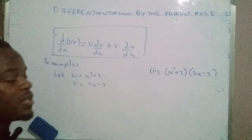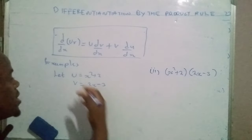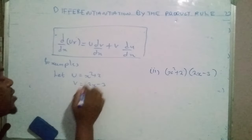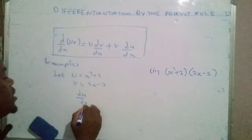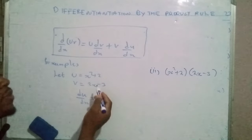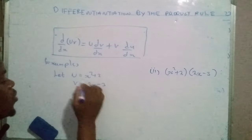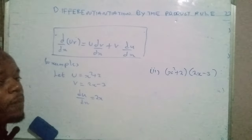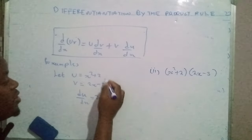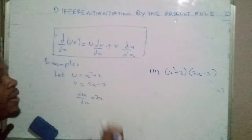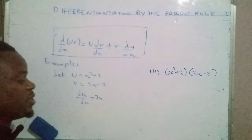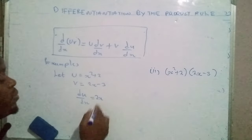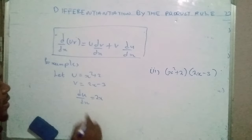The second step is to differentiate these two functions. Differentiating u with respect to x: du/dx — using the power rule, the two will drop to give 2x to the power one. When you differentiate the constant 2, the answer is zero. So du/dx equals 2x plus zero, which is 2x.